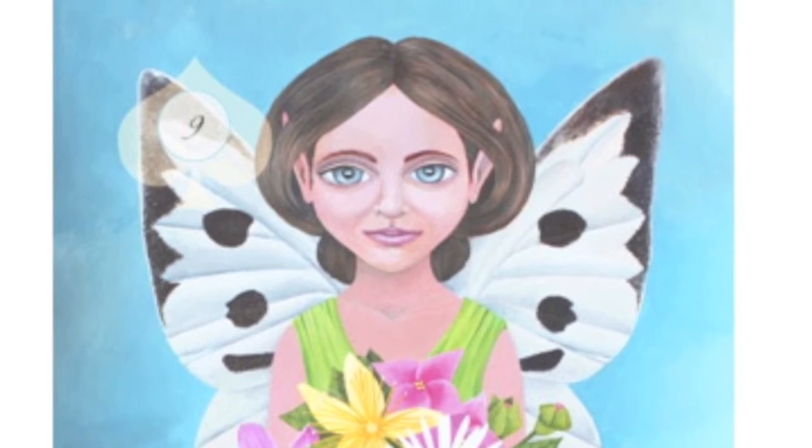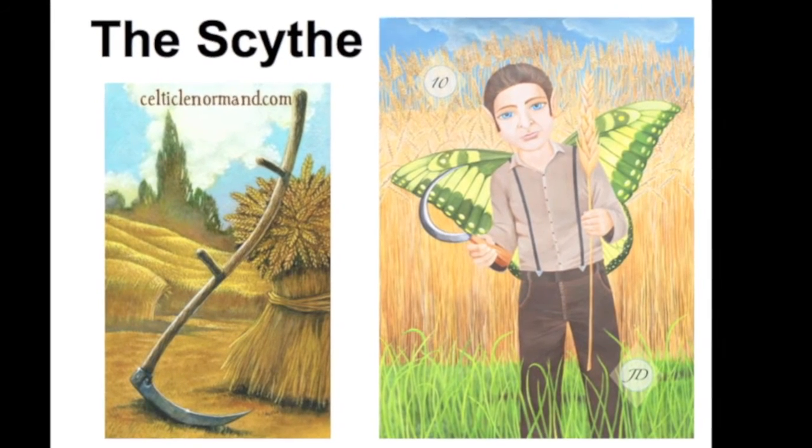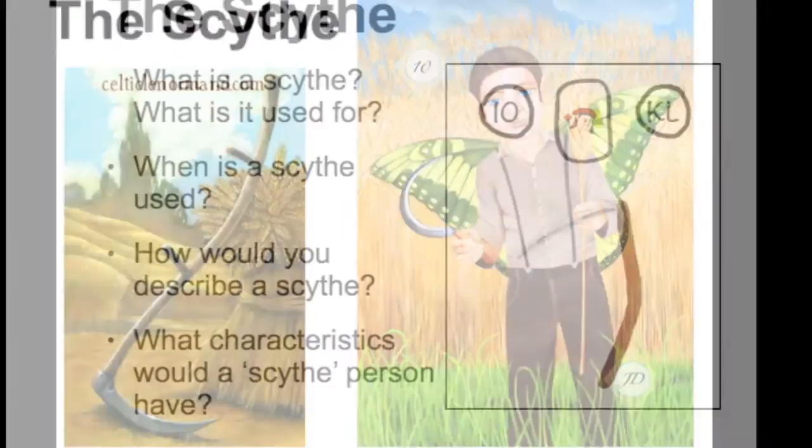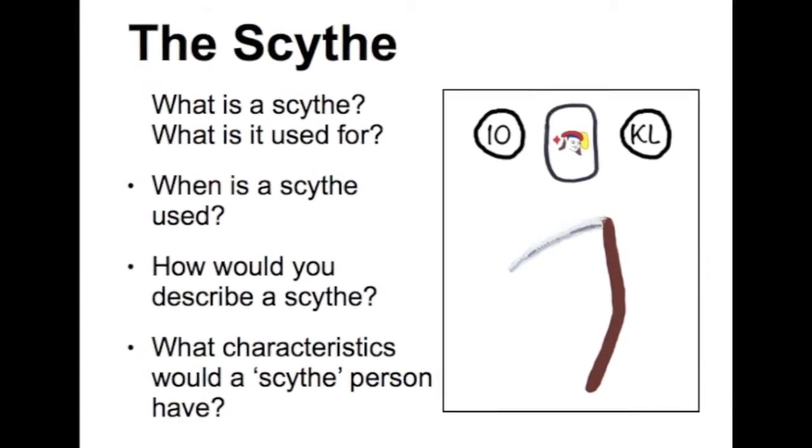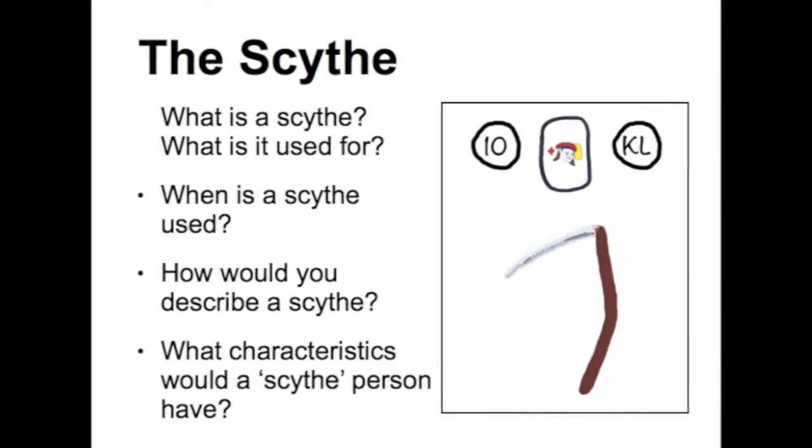If we turn next to look at the scythe, the questions include: what is a scythe? What is it used for? When is a scythe used? How would you describe a scythe? And what characteristics would a scythe person have? Clearly, a scythe is a tool used for harvesting. In that sense it can relate to any kind of tool, and it is a bladed tool, so it is sharp. That gives us key words such as sharp and cutting. And when you harvest, that's about gathering things in. When you gather them you also have to sort them — if you think about harvesting wheat, you have to separate the wheat from the chaff, so sorting can be another key word for the scythe.